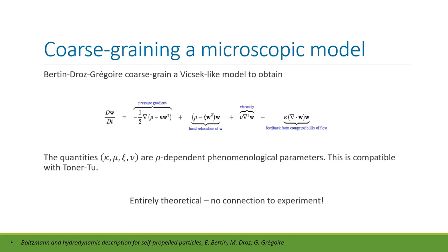There's a subsequent paper that coarse-grained one of the agent-based models — the one with birds moving in a box — and obtained a refinement of the Toner-Tu description where the Euler equation has four terms: a pressure gradient term, a local relaxation of the velocity, a version of viscosity, and feedback from compressibility of flow. The coefficients involved in each of these terms are phenomenological parameters which may be density-dependent.